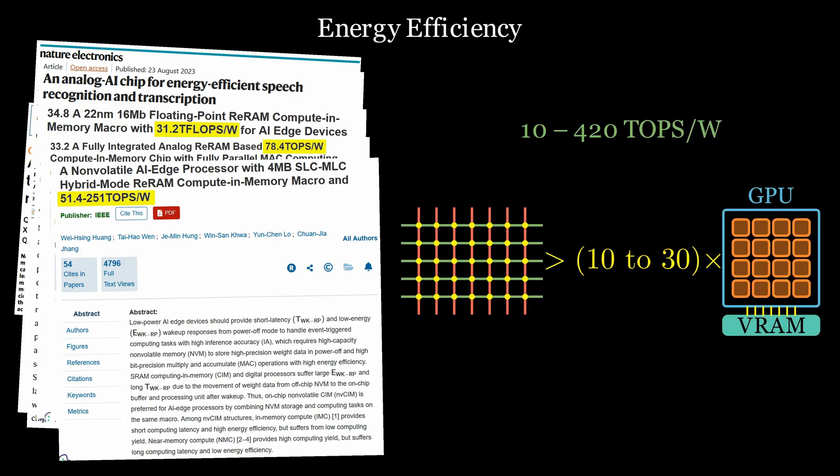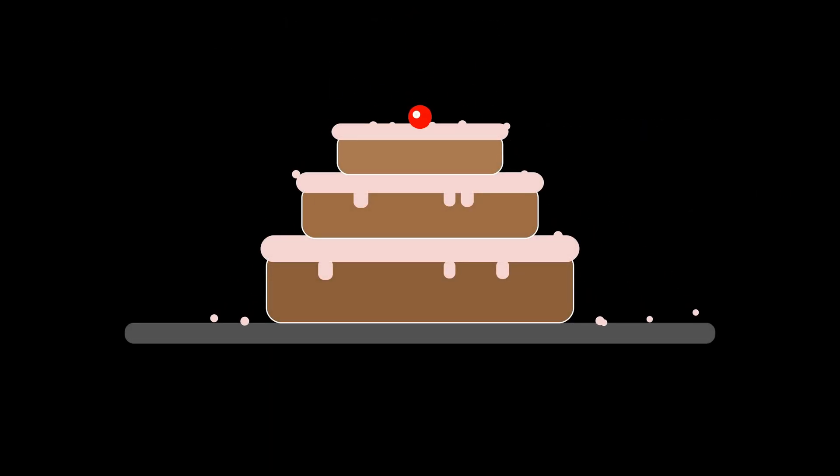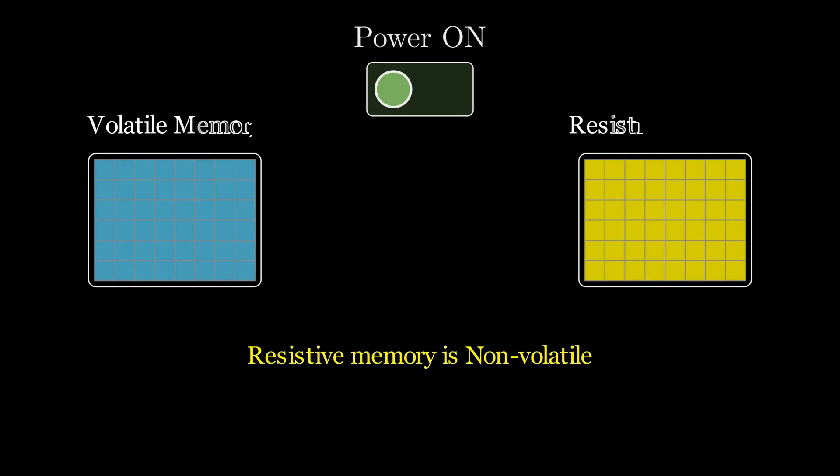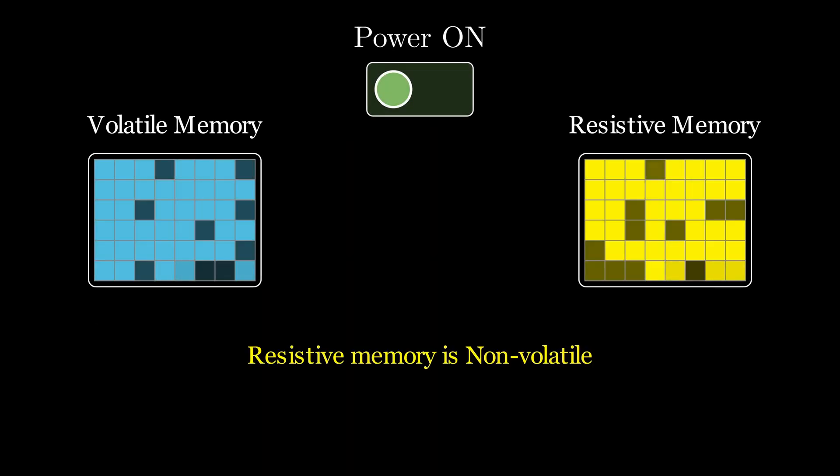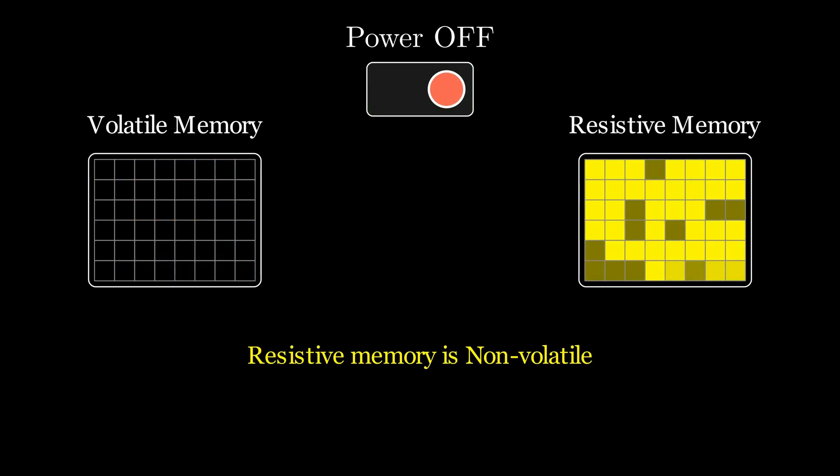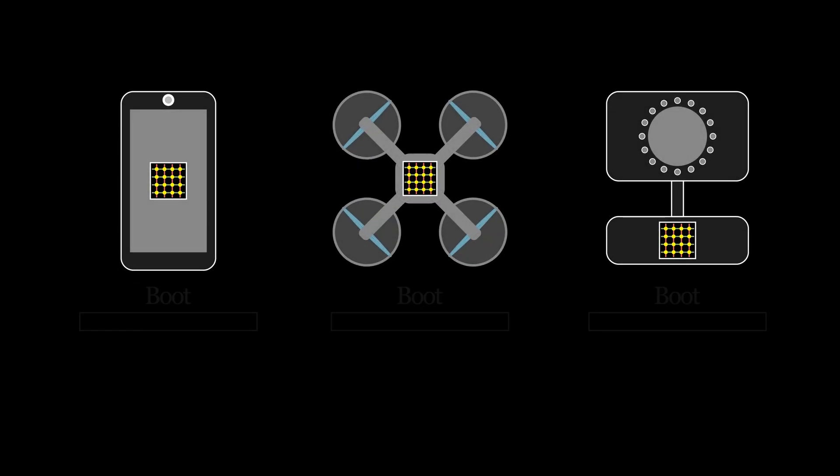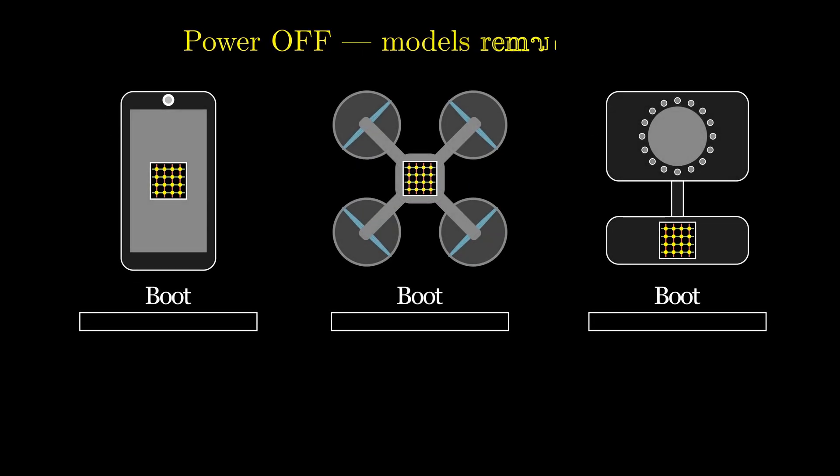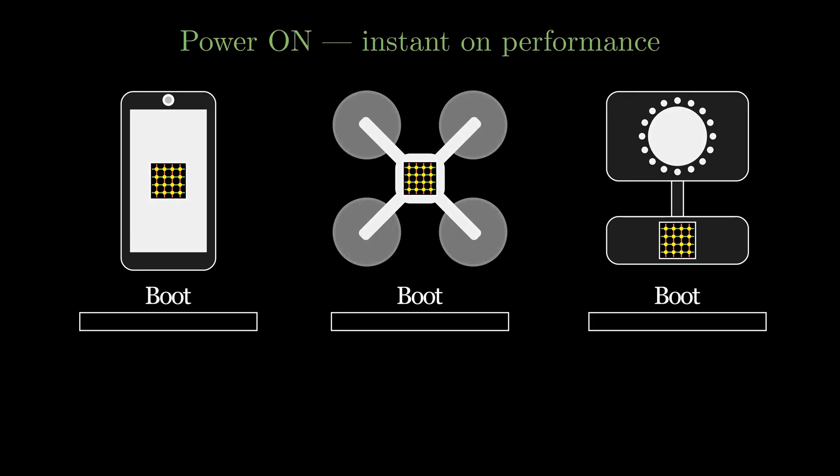And the cherry on top: resistive memory is non-volatile. It remembers the weights even with the power off. For AI on your phone, a drone, or any edge device, that means models stay stored and you get instant-on performance.